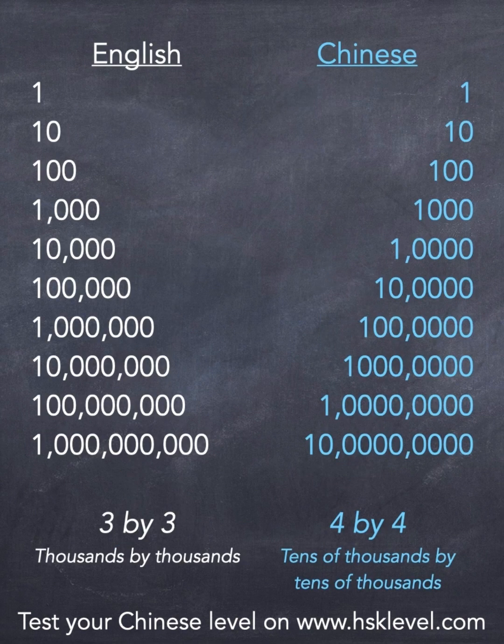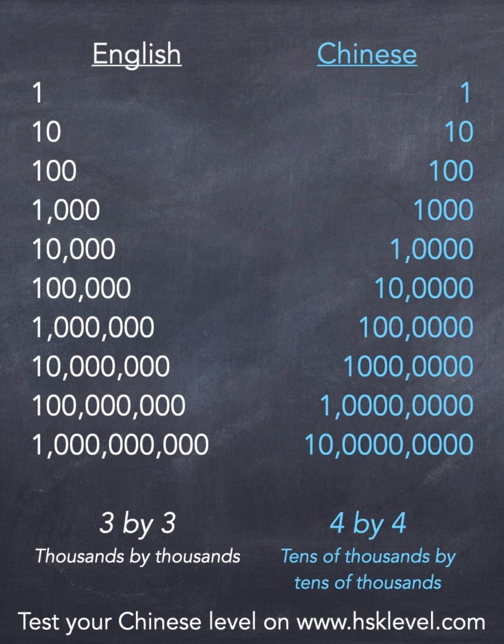First, we have to notice that in English, we group the digits of numbers by groups of three, which means that we count thousands by thousands. On the other hand, in Chinese, people group the digits by groups of four, which means that Chinese people count tens of thousands by tens of thousands.